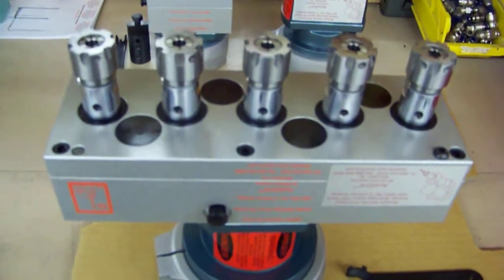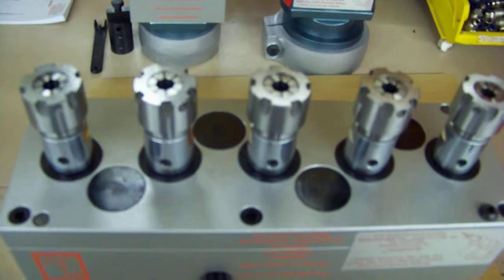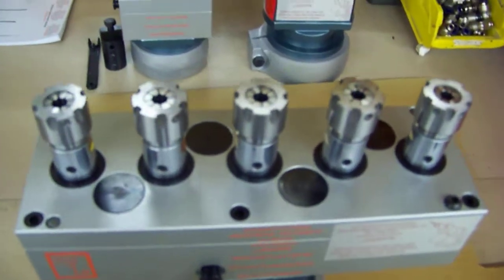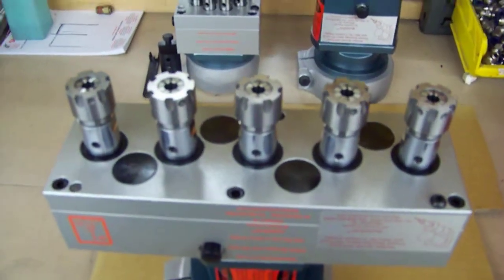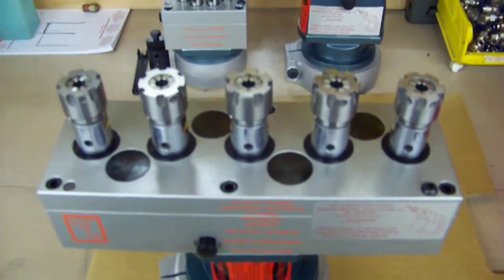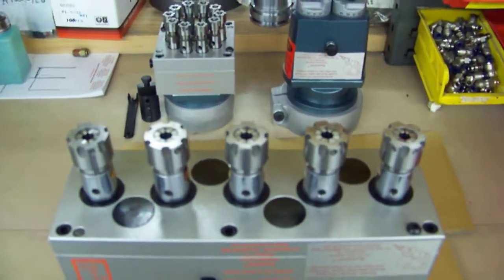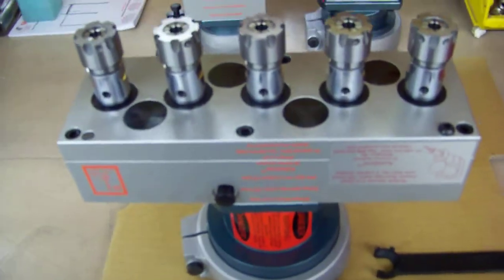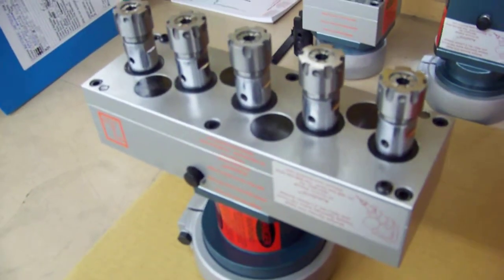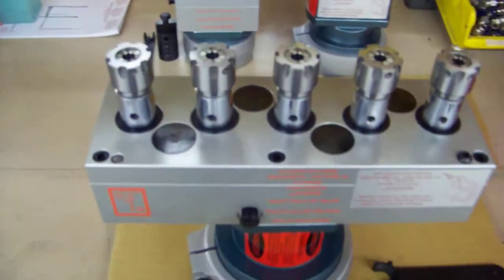All of the spindles on this 5 spindle head rotate in the same direction as the input with a 1 to 1 ratio and our ER20 style collets and spindles. The collets themselves are for 5 sixteenths drills and this head is rated to drill a half inch or 13 millimeter holes all day long in steel,